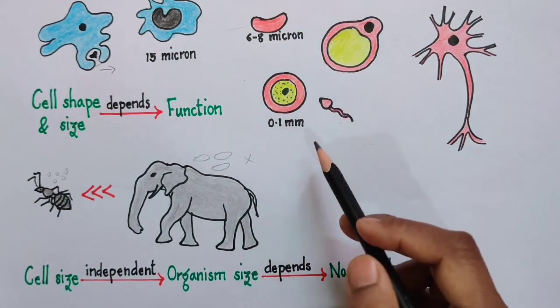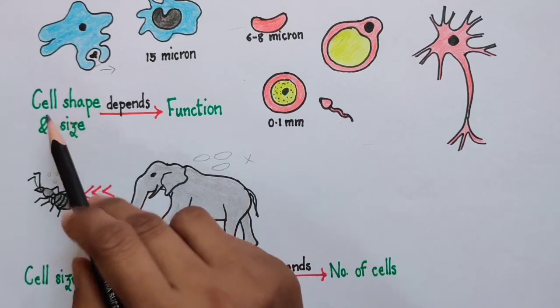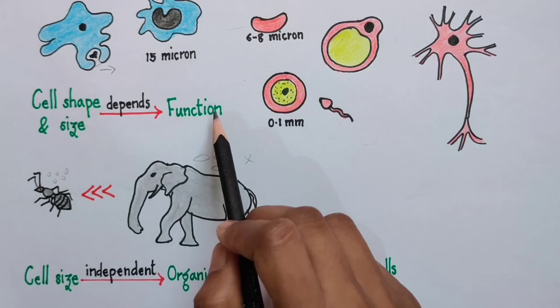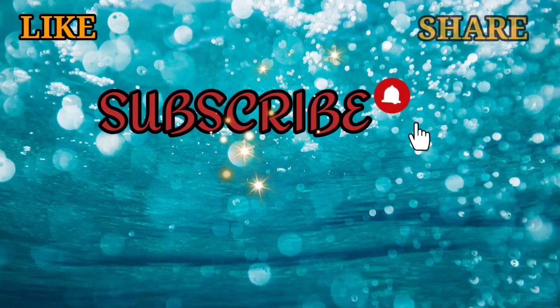So the essence of this entire story, whatever we discussed now, is that the cell shape and size depends upon the function, and the organism size depends upon the number of cells and not on the cell size. So that's all for this video. Thank you. Do like, subscribe, and share this video.